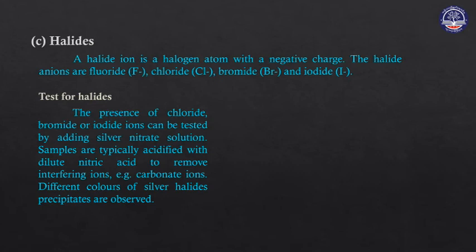Halides: fluoride, fluoride, bromide, iodide — hyalide hydrogen. Test for halides: fluoride, bromide, and iodide are tested using silver nitrate solution.